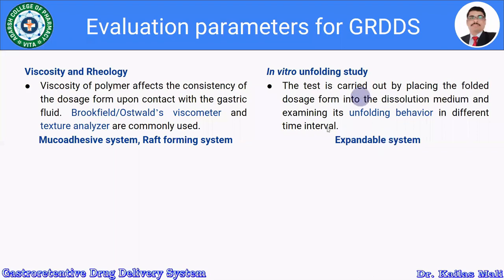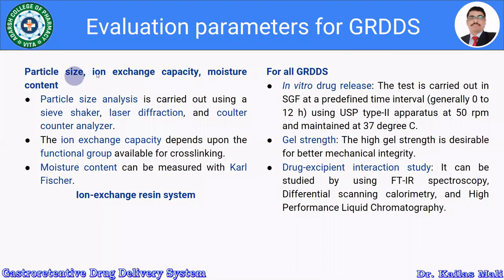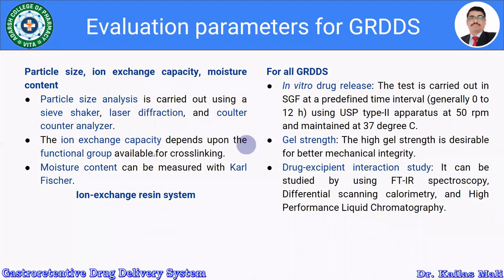Particle size, ion exchange capacity, and moisture content also need to be measured. If ion exchange resins are used, the ion exchange capacity of the resin must be considered along with moisture content. Particle size analysis is carried out using a sieve shaker, laser diffraction, and Coulter counter analyzer. Ion exchange capacity depends on the functional groups available for cross-linking, and moisture content can be measured with Karl Fischer titration. This test is applicable to ion exchange resin systems.